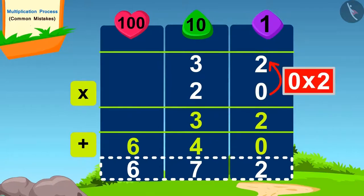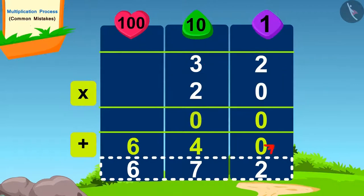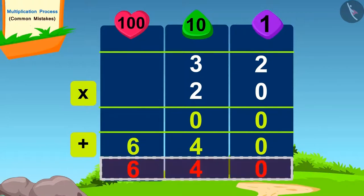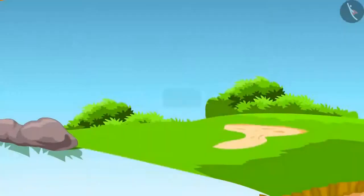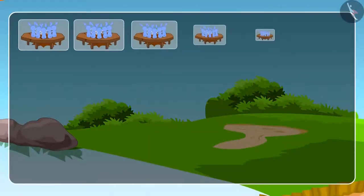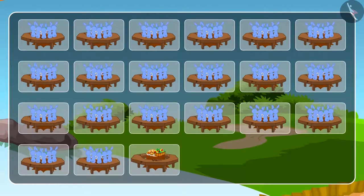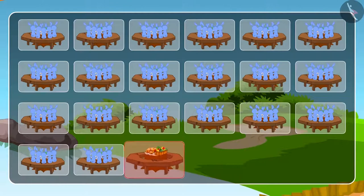So, how do we find the right answer? Well done children! You have found the answer to this correctly. Only 640 rabbits were to arrive at the party. While calculating, Shere Khan made a mistake and he counted 32 more. Therefore, those seats were left empty.